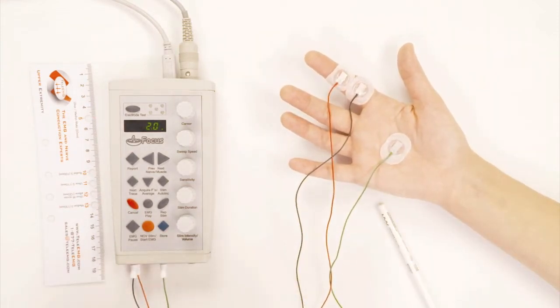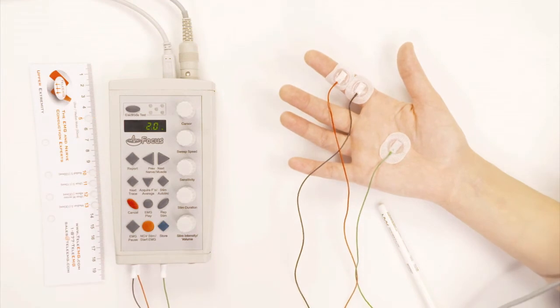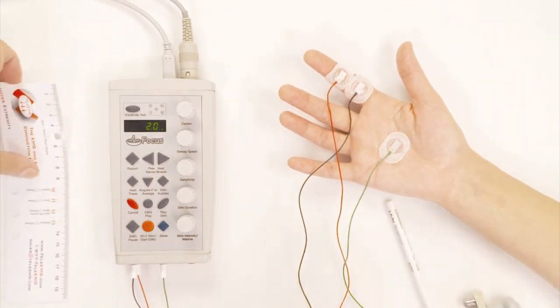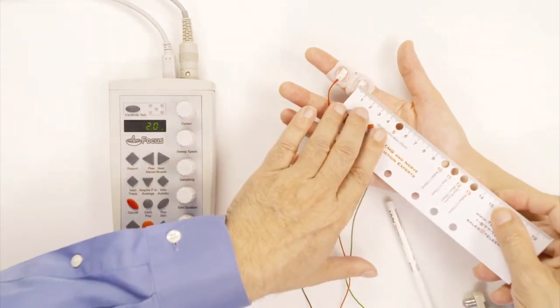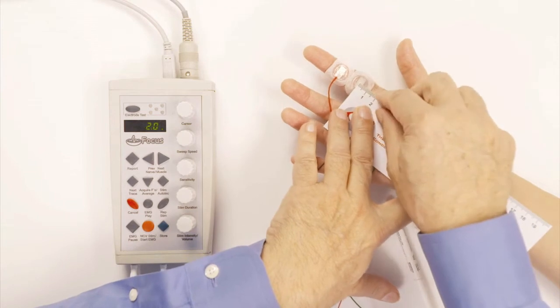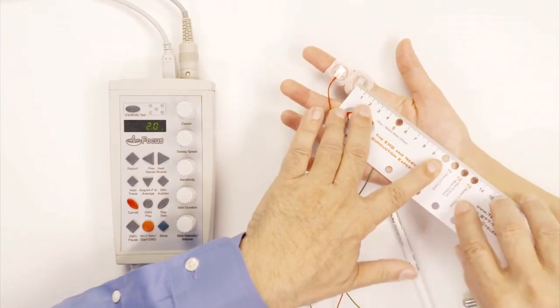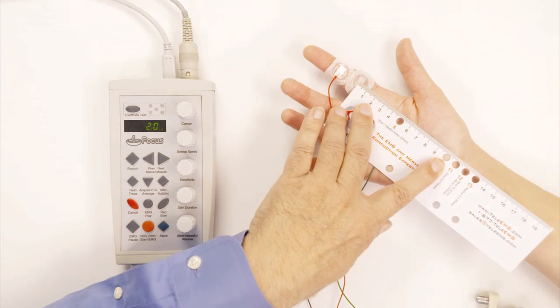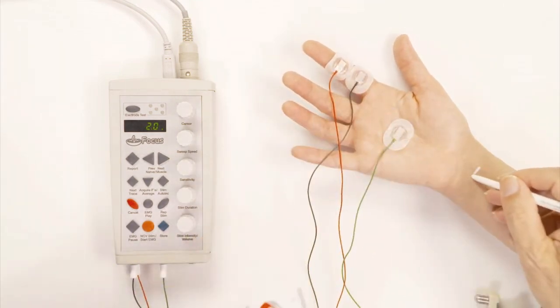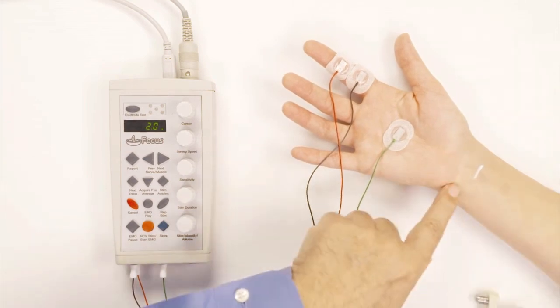So here we go. I put some gel on the stimulator. And then I measure the distance where I'm going to stimulate the nerve. And here I have the zero at the black electrode point. And here it says median sensory. And I will put the marker through this to find out for sure where I'm going to stimulate the nerve. And it turns out to be right here.